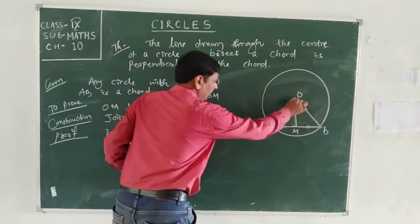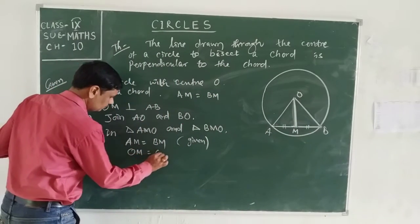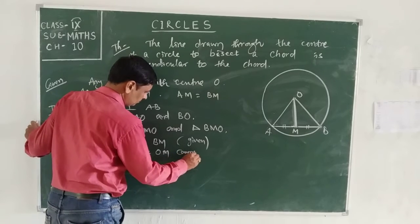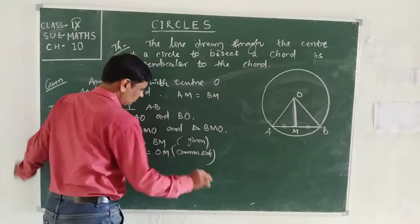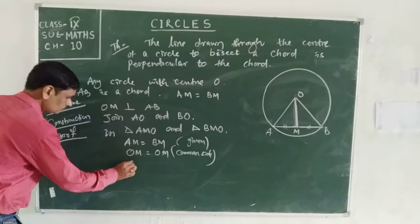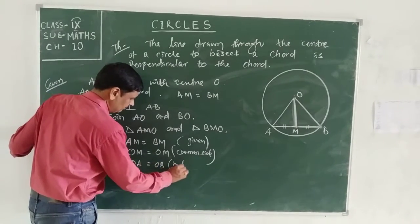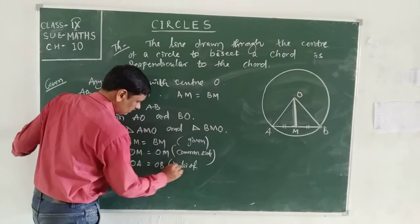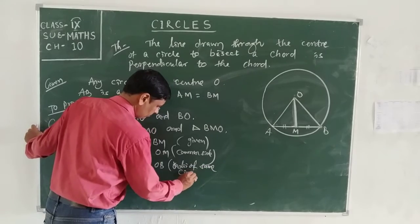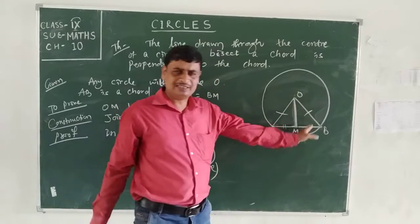Next, OA equals OB because these are radii of the same circle. Also, OM equals OM, which is the common side. So we have three pairs of equal sides — SSS.